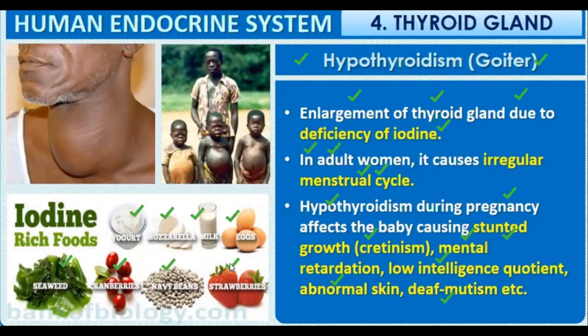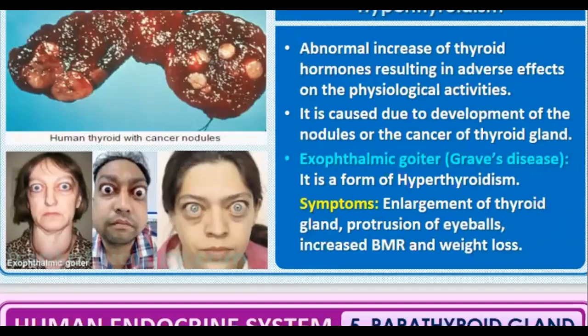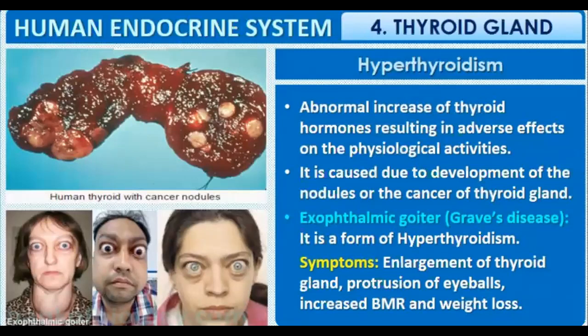Due to reduced thyroid hormones, metabolism is low, and even though we are eating properly, food is not metabolized correctly. This can be addressed with iodine. The next disease is hyperthyroidism, where the thyroid gland creates more hormones.